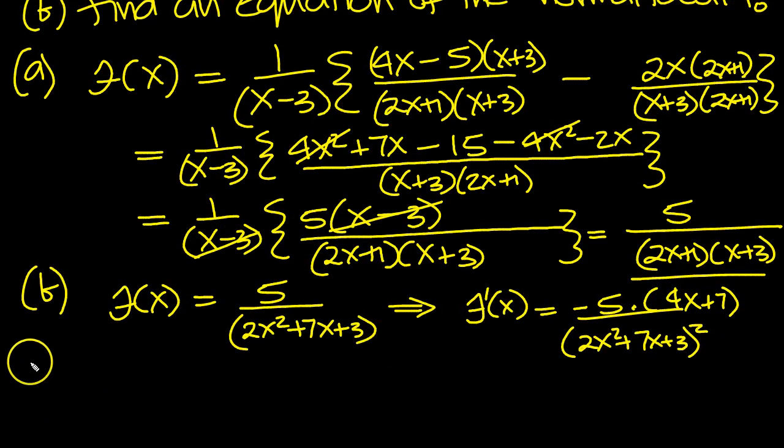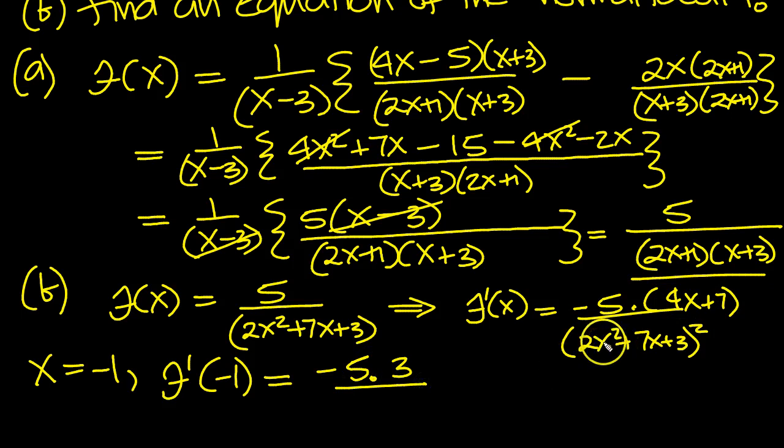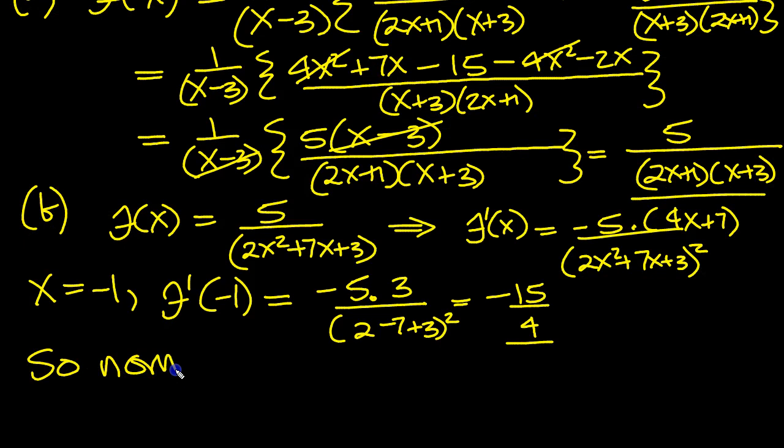So when x is minus 1, f dashed of minus 1 is equal to minus 5 on top. This is minus 1 here. Minus 4 plus 7 is 3. Here we've got 2 times minus 1 squared is 1, 2 times 1 is 2, 7 times minus 1 is minus 7, then we've got plus 3 squared. So it's minus 15 on the top then. We've got 5 take away 7 is minus 2 squared, which is 4. So there's our gradient of tangent. So the normal gradient at P is 4 over 15, invert it and then drop a minus.